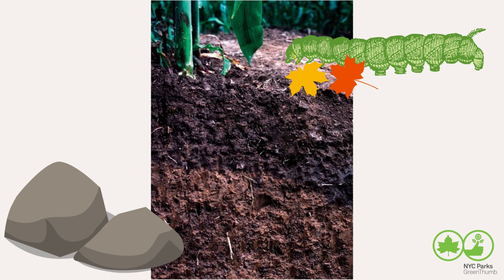In an undisturbed environment, soil naturally presents itself in layers. On the bottom, we have mostly mineral matter from weathered bedrock working its way upwards. On top, we have a layer of organic matter from decomposed plants and animals working its way downward through gravity and water leaching. They meet in the middle and mix. That top layer is also known as topsoil and is such a valuable resource.